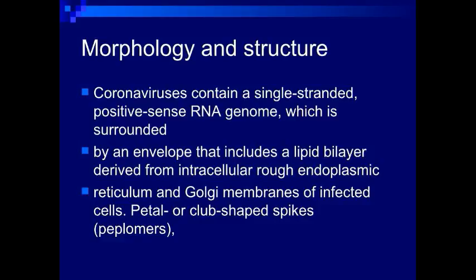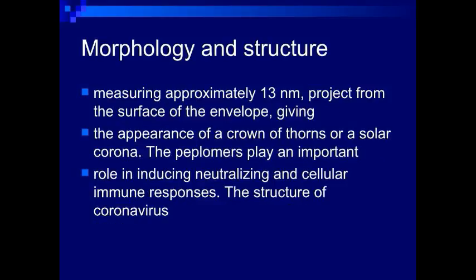Morphology and structure. Coronaviruses contain a single-stranded positive-sense RNA genome, which is surrounded by an envelope that includes a lipid bilayer derived from intracellular rough endoplasmic reticulum and Golgi membranes of infected cells. Club-shaped spikes called peplomers, measuring approximately 13 nanometers, project from the surface of the envelope, giving the appearance of a crown, sun, or solar corona.